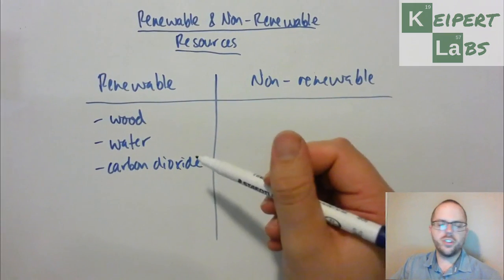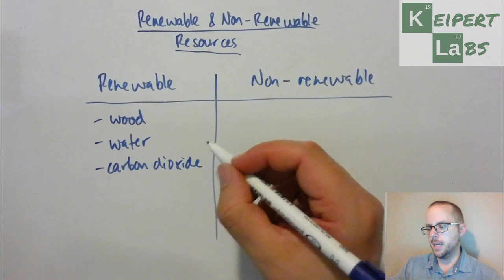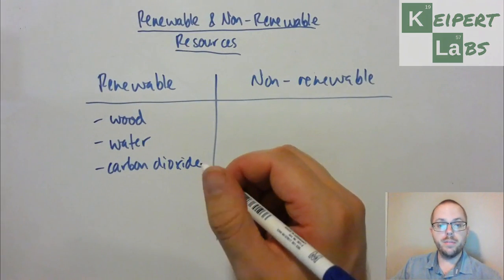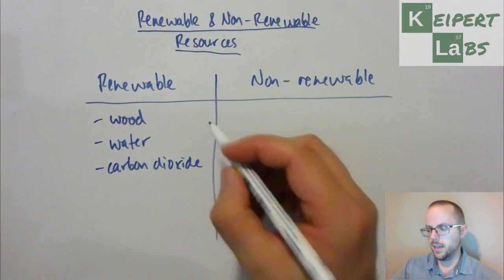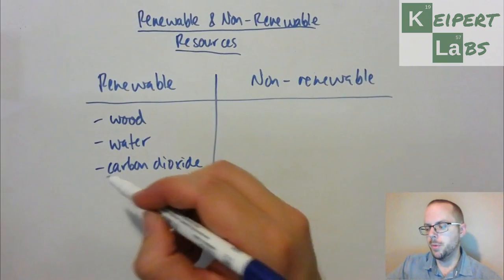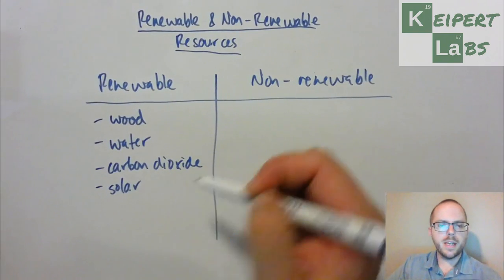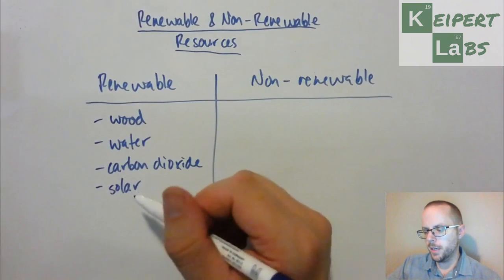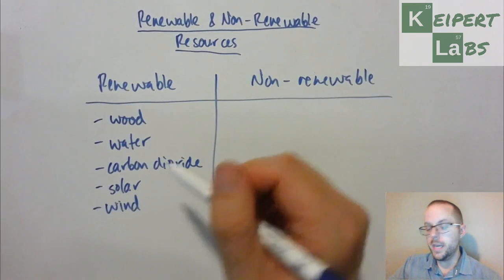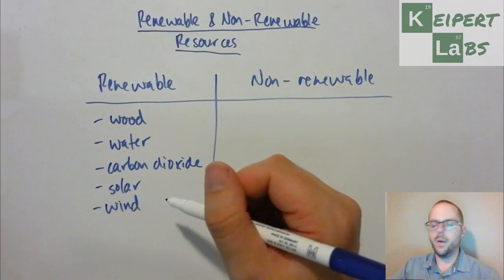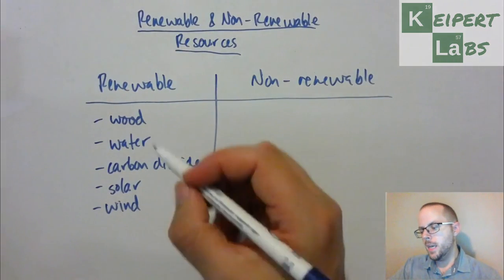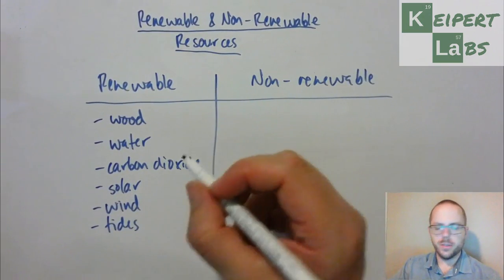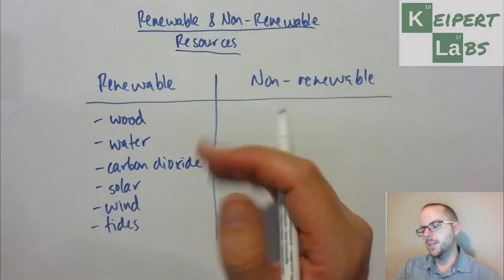Whether carbon dioxide should be included on a list like this is a bit debatable, as far as we don't necessarily use it from the environment in that way, but it would be considered renewable. Energy that comes from the sun is renewable — so solar energy. We might also look at wind and wind power, or ways of generating electricity with wind. Things like the tides are a renewable resource, as far as just the movement of water from one place to another.